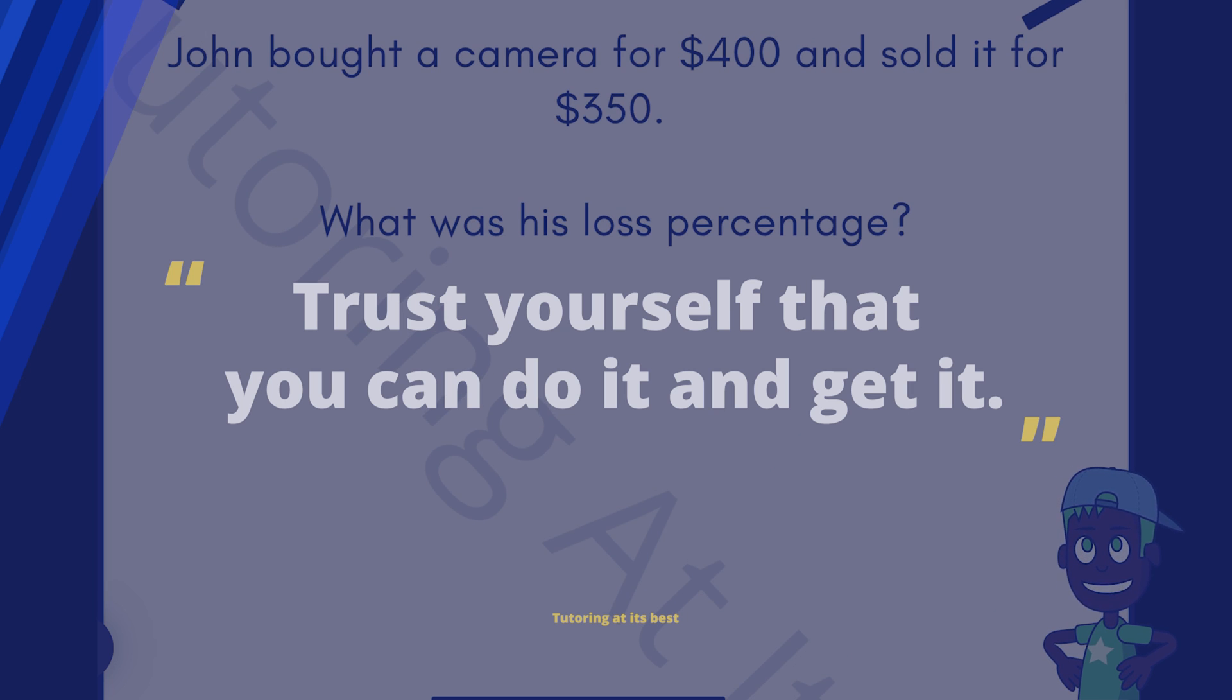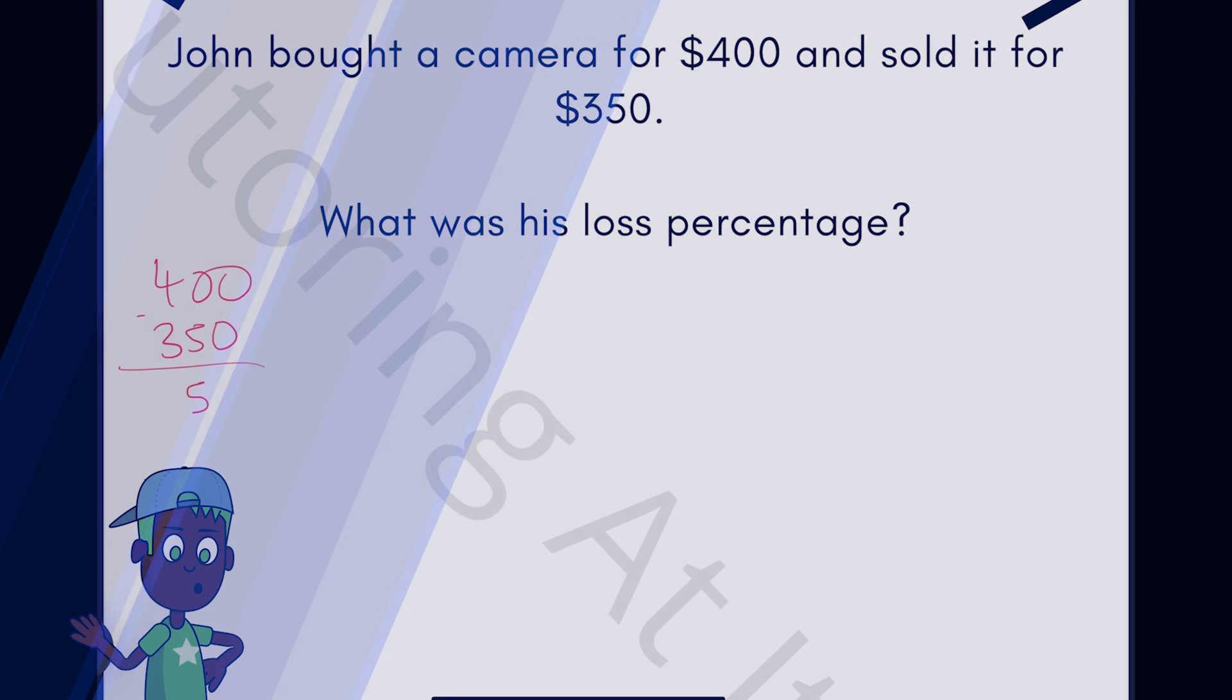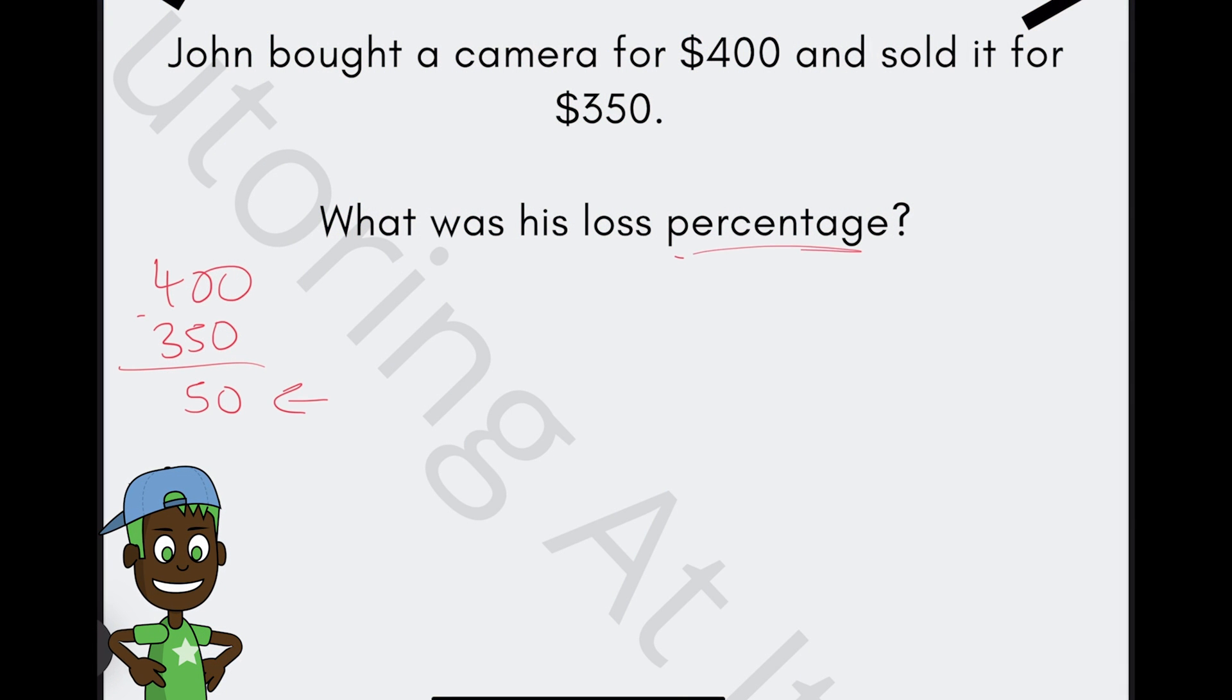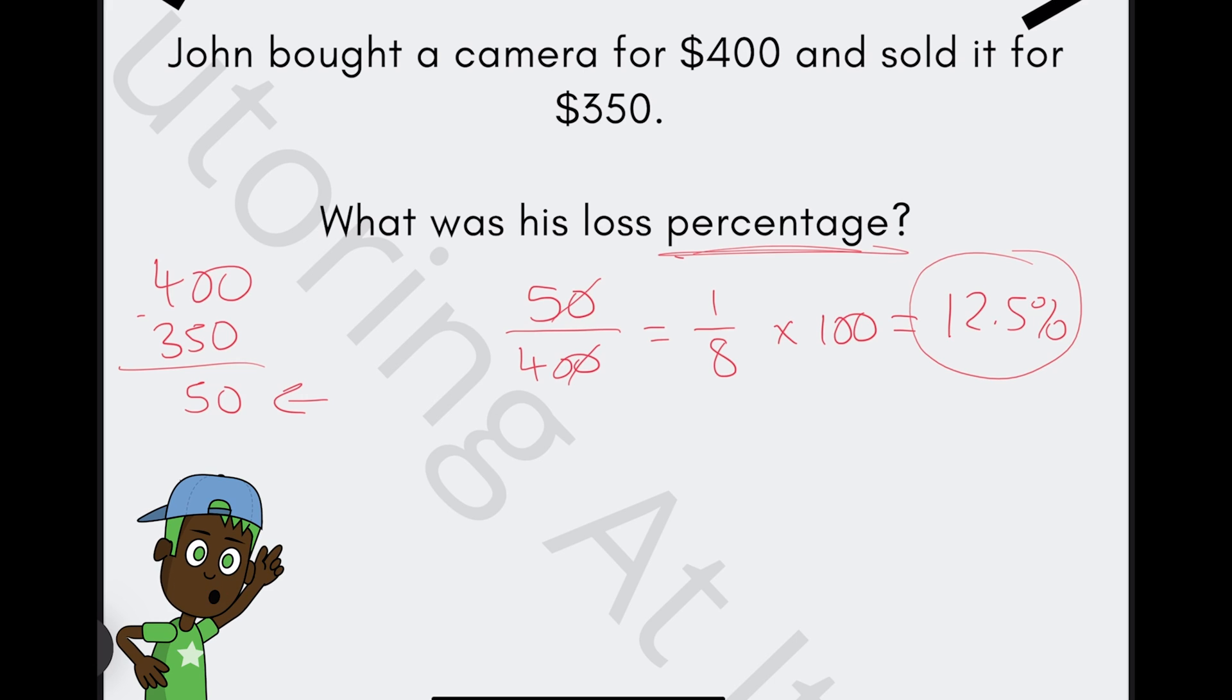John bought a camera for $400 and sold it for $350. So what was his percentage loss? Well, instantly we know if we have $400 subtract $350, that gives us $50. So the loss is $50. But they're looking for the percentage here. So this is where we have 50 over the cost, which is $400. It can be 5 over 40 or 1 over 8, and then we times that by 100, and that gives us 12.5%. So John's loss percentage was approximately 12.5%.